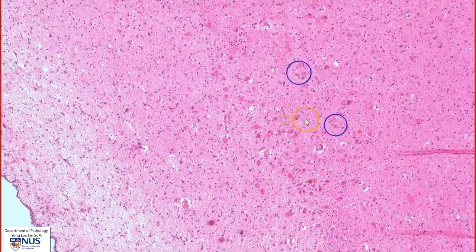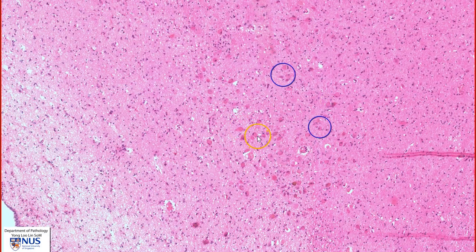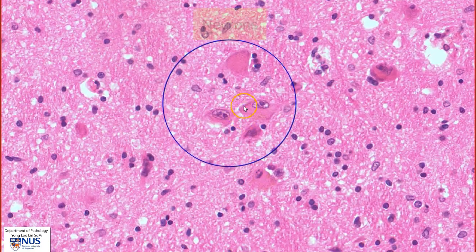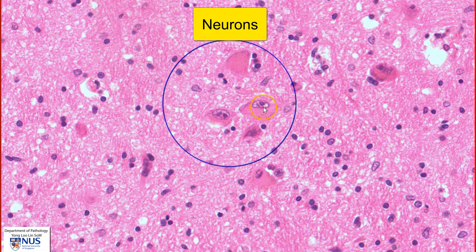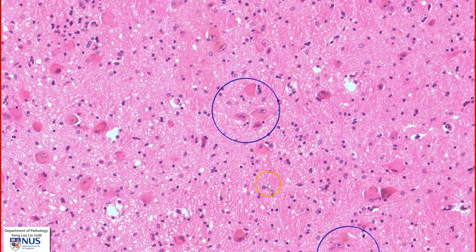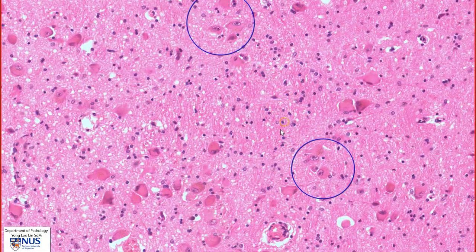Moving to this area, we begin to see some large neurons. This is the periventricular gray matter. We can see these roughly triangular-shaped neurons with large open or vesicular nuclei and prominent nucleoli. There is also some brown lipofuscin pigment within the cytoplasm, and there are many astrocytes in the surrounding parenchyma.